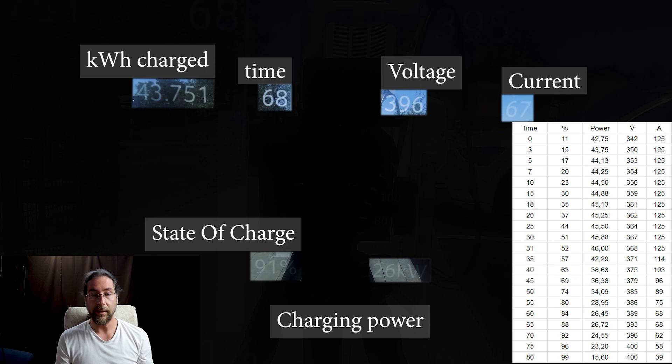At 90 percent we still have 26 kilowatt, 43 kilowatt hours charged at 67 minutes. At 70 minutes, 44 and a half kilowatt hours charged, 92 percent.